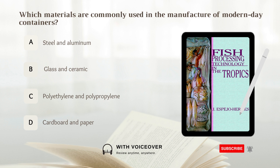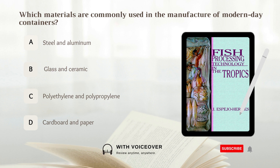Which materials are commonly used in the manufacture of modern-day containers? Options: A. Steel and aluminum. B. Glass and ceramic. C. Polyethylene and polypropylene. D. Cardboard and paper. Answer: C. Polyethylene and polypropylene.